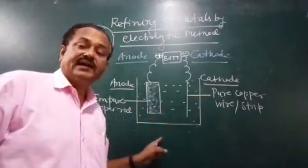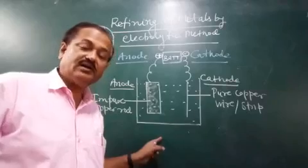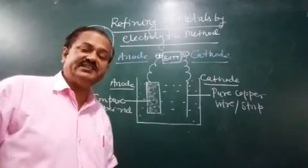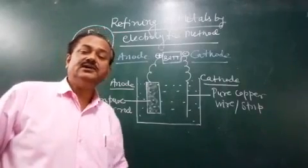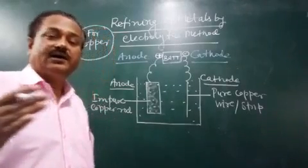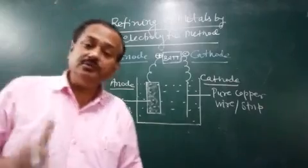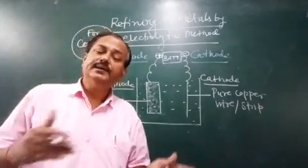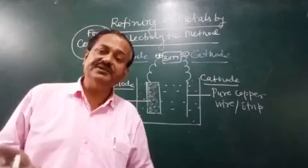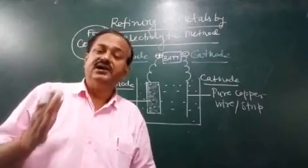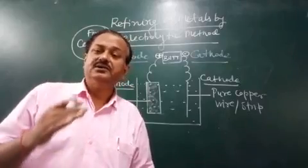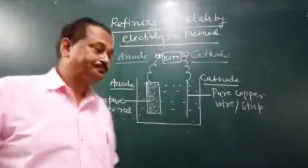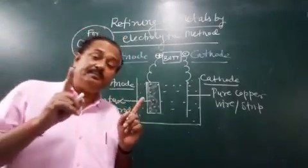Here there is an electrolytic cell or a vessel. The vessel is generally made up of stone on a commercial level; at a laboratory we can use a beaker made up of glass or plastic.